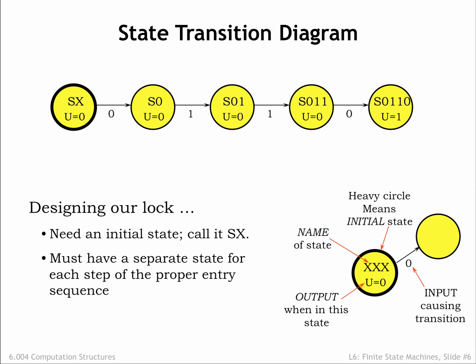Looking at the state transition diagram, we see that if the FSM starts in state SX, the input sequence 0, 1, 1, 0 will leave the FSM in state S0110. So far so good!